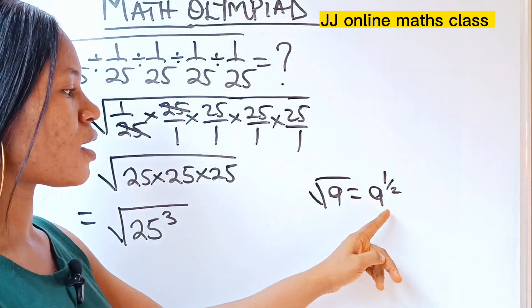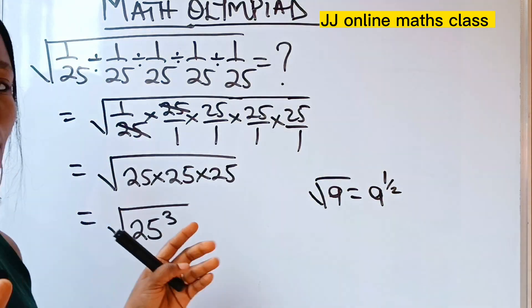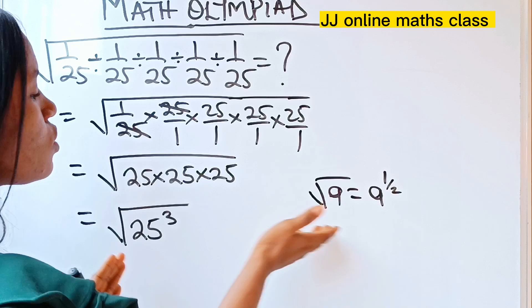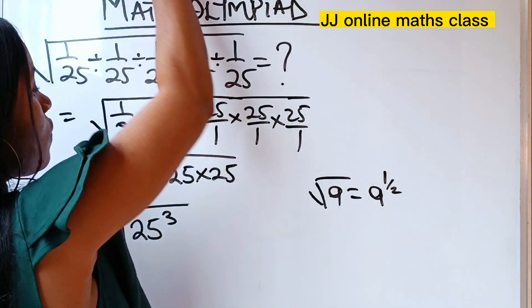If I want to remove this square root sign, I'm going to raise a to the power of half. So in the same manner, in the same way relating this to this, that means that if I want to write this 25 to the power of 3,